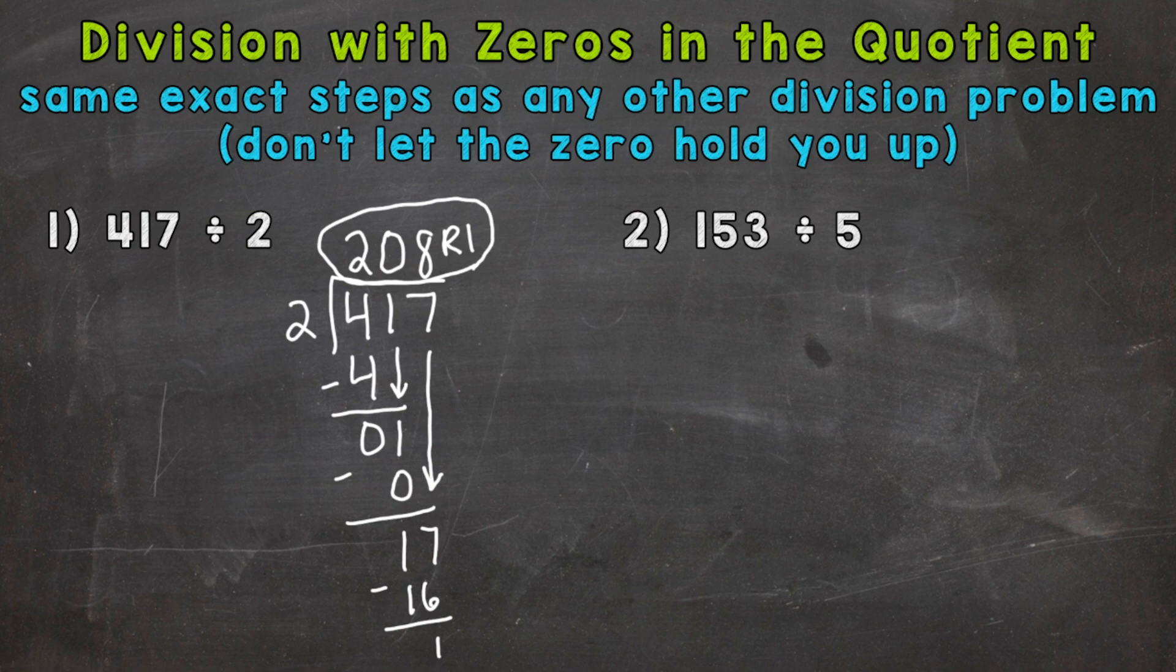Let's go to number 2. This one's a little different as far as where the 0 is. So we have 153 divided by 5. So let's set it up. And we start with, we can't do 1 divided by 5 and get a whole number. We can't pull a whole 5 out of 1. So we go to the 15. How many whole 5's can we pull out of 15? 15 divided by 5, and we get 3. Multiply, 3 times 5 is 15. Subtract, we get 0. Now bring down the 3.